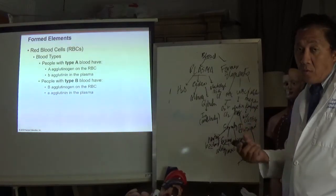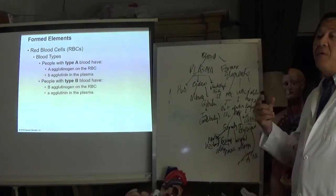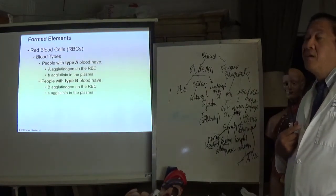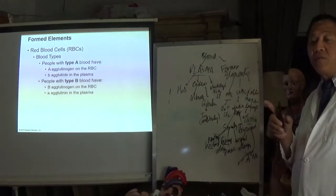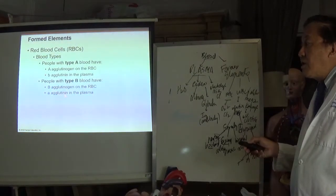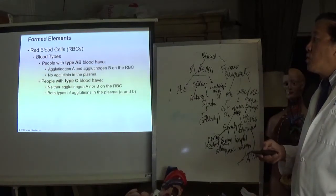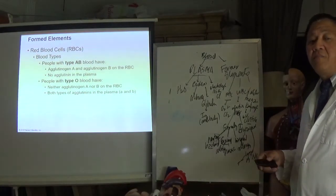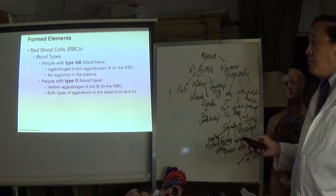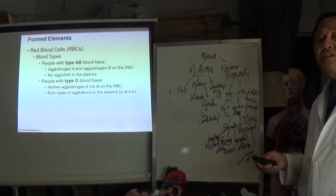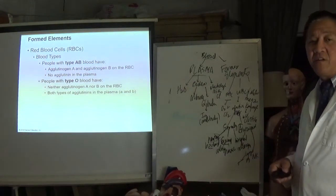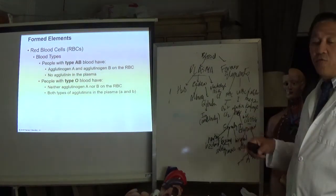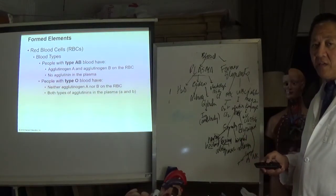Type AB blood has both A and B antigens and does not have antibodies in the plasma, making it the universal recipient. Type O has no antigen A or B on the surface of red blood cells — that is why it is the universal donor — but unfortunately it has both anti-A and anti-B antibodies in its plasma.